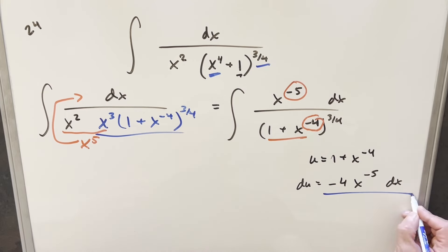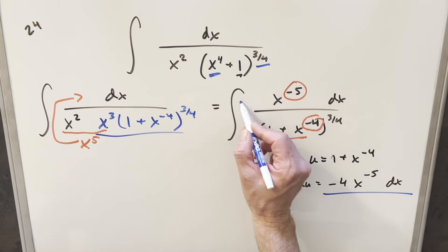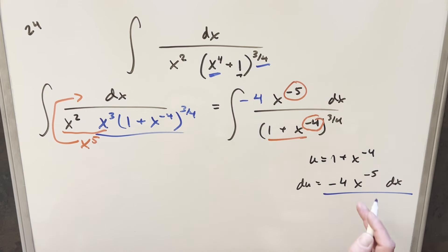And then so all I need to do to create my du value here in the numerator is just multiply by minus 4, then we're matching this exactly. I don't want to change it, so I'll multiply by minus 1/4th in front. And then I'll just go ahead and substitute.